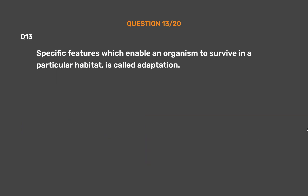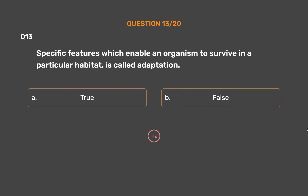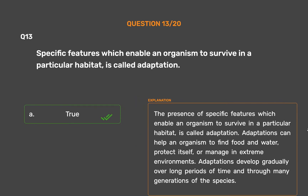Question 13. Specific features which enable an organism to survive in a particular habitat is called adaptation. Adaptations can help an organism to find food and water, protect itself, or manage an extreme environment. Adaptations develop gradually over long periods of time and through many generations of the species.